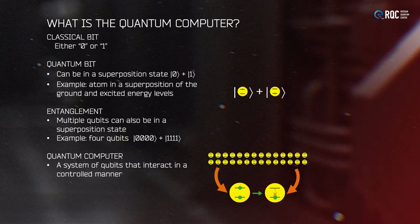We've discussed qubits a lot in our course. You know that the polarization of a photon is an example of a qubit. The general definition of the qubit is a two-dimensional Hilbert space. There are many other implementations of a qubit — one of them is an atom which can be in a superposition of ground and excited state.